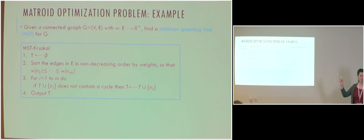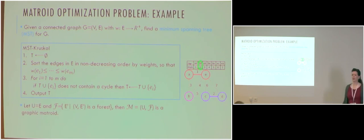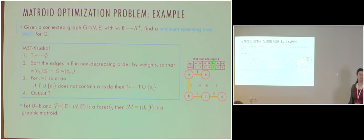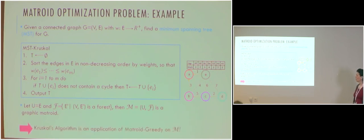We define the universe as the set of edges in the graph, and the independent sets as all subsets of edges E' such that (V, E') is a forest. It can be shown that (U, F) defined this way is a graphic matroid. Kruskal's algorithm is in fact an application of the matroid greedy algorithm on this graphic matroid. This was one example of the connection between matroids and problems on graphs.